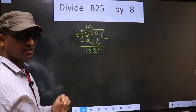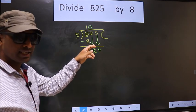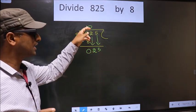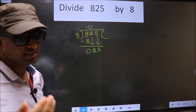I repeat. Whenever you are bringing down 2 numbers, then compulsory put 0 in the quotient. Remember this point.